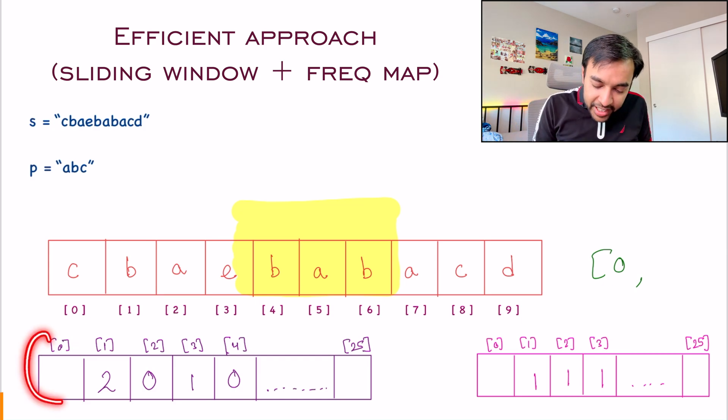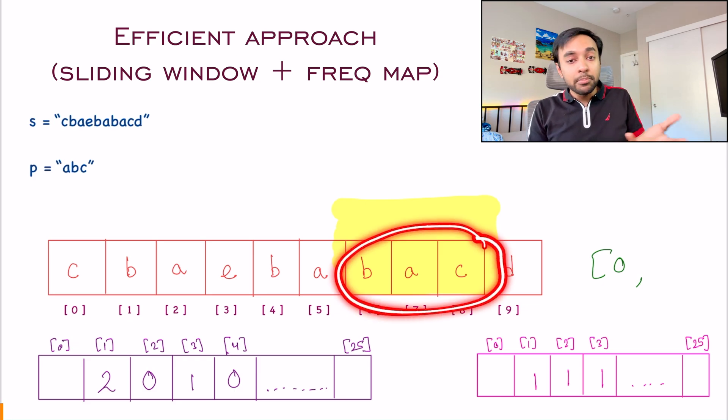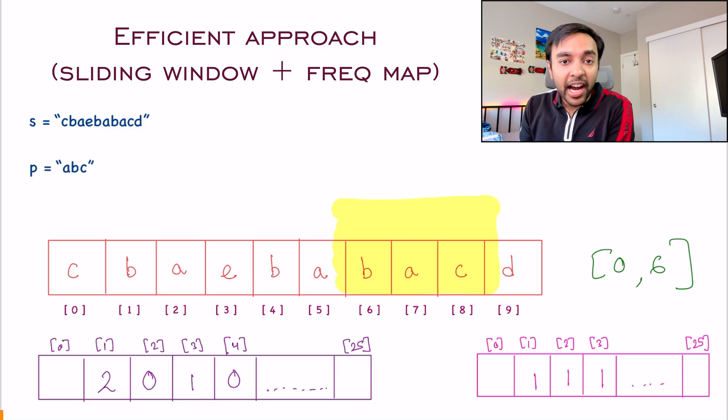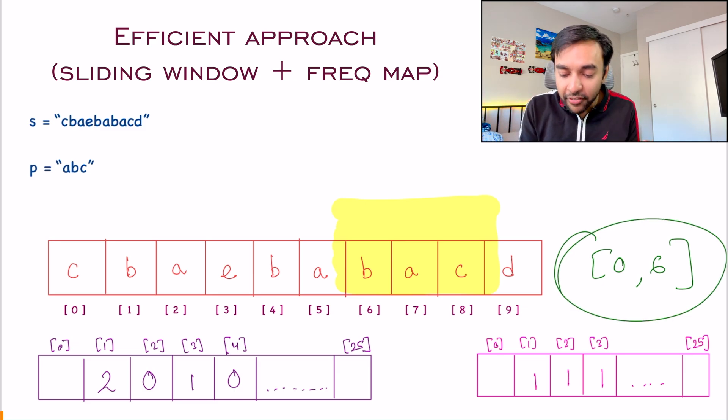At every instance, this frequency map is telling me what do I have in my window. So if you will keep on sliding it, certainly you will reach one more situation where you find the string BAC. And once again, both of these arrays will be equal. You can add the six to your result set. And hence, once you are done iterating, you will have your answer available.